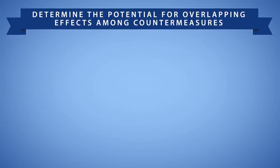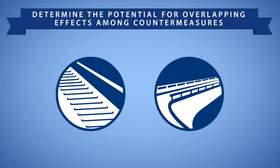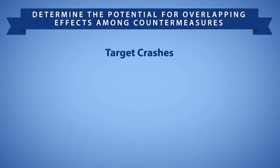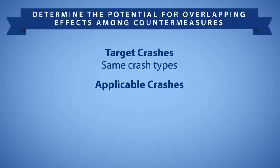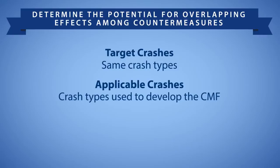The next step is to determine the potential overlap among individual countermeasure effects. Potential overlap is defined with respect to target crashes and represents the likelihood that individual countermeasures would address the same crash types. This is different than the applicability of the CMF, which is based on the crash types used to develop the CMF. For example, an agency may construct a roundabout to target right-angle crashes, while a researcher develops a CMF to evaluate the impact on fatal and injury crashes.